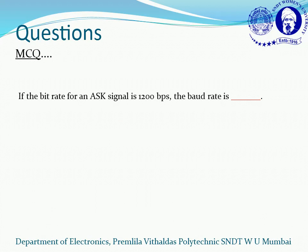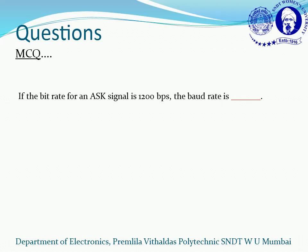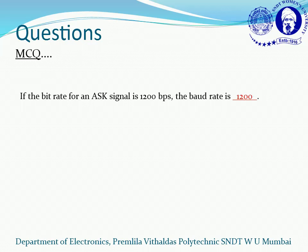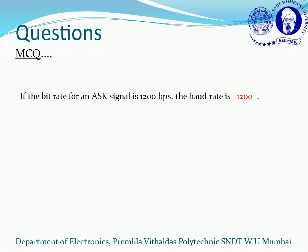MCQ question: if the bit rate of an ASK signal is 1200 bits per second, what will be the baud rate? Correct — 1200. The bit rate and baud rate for an ASK signal are the same because one bit is used to represent one symbol, so the symbol rate and data bit rate are equal.